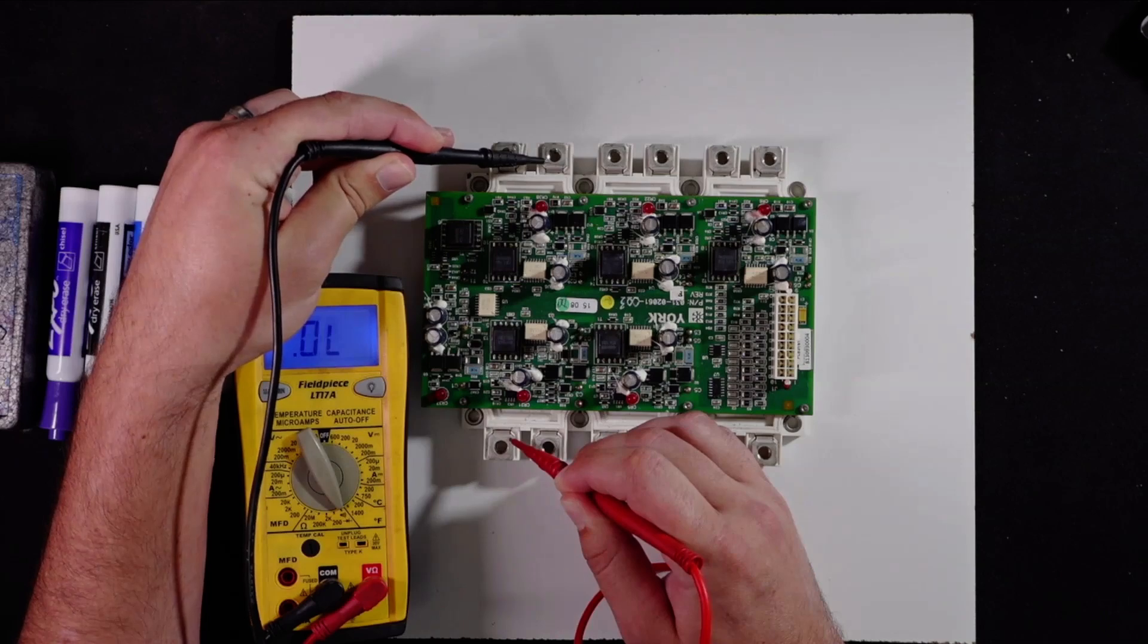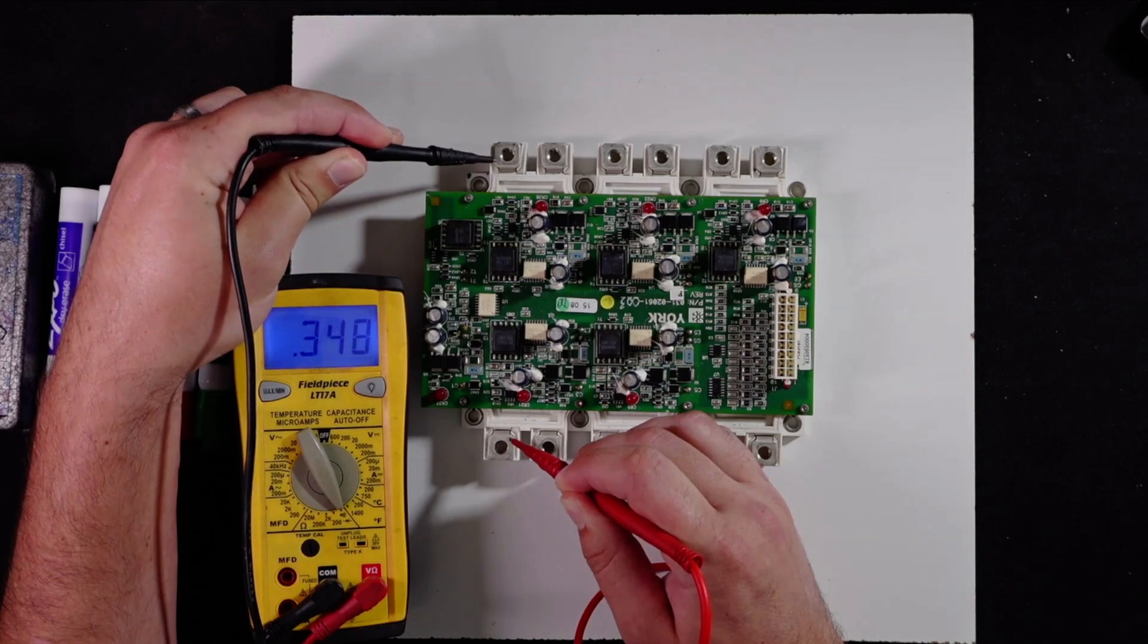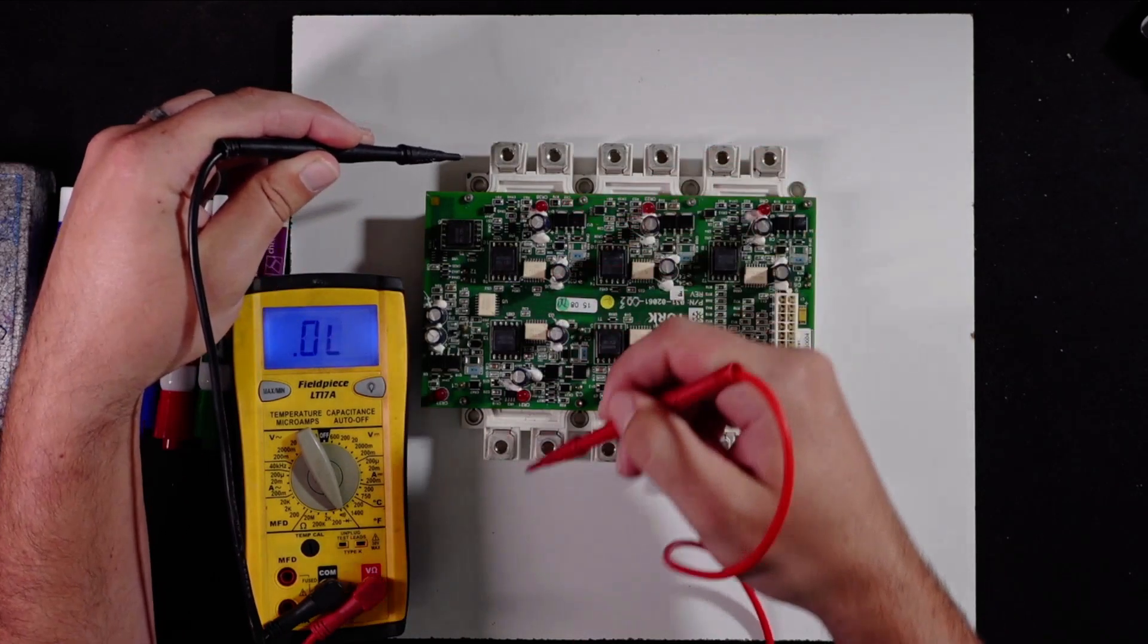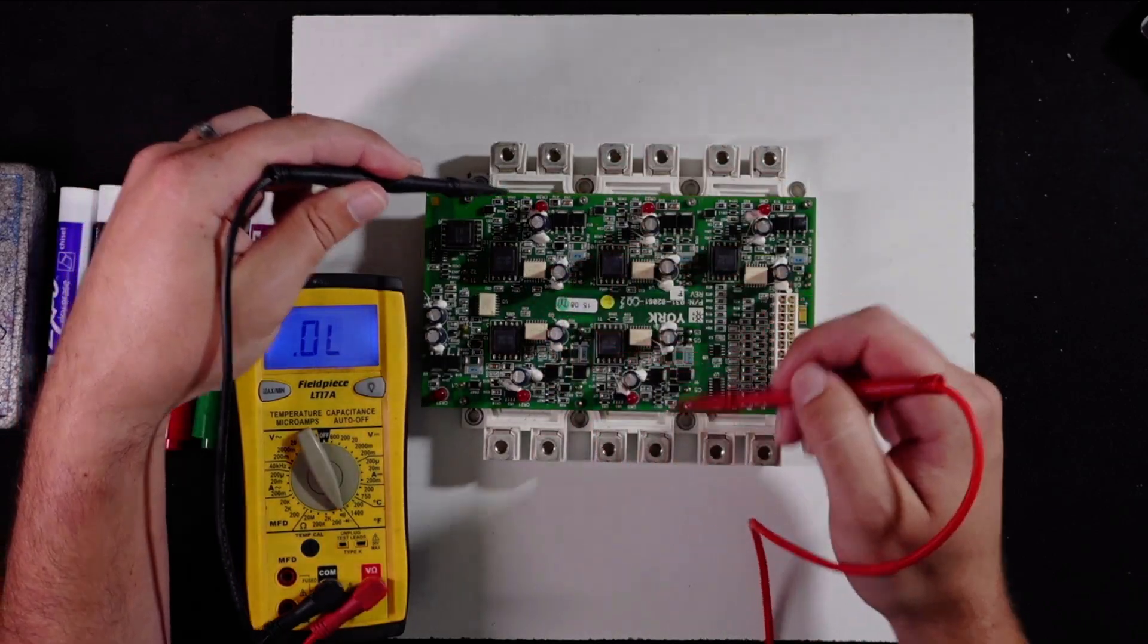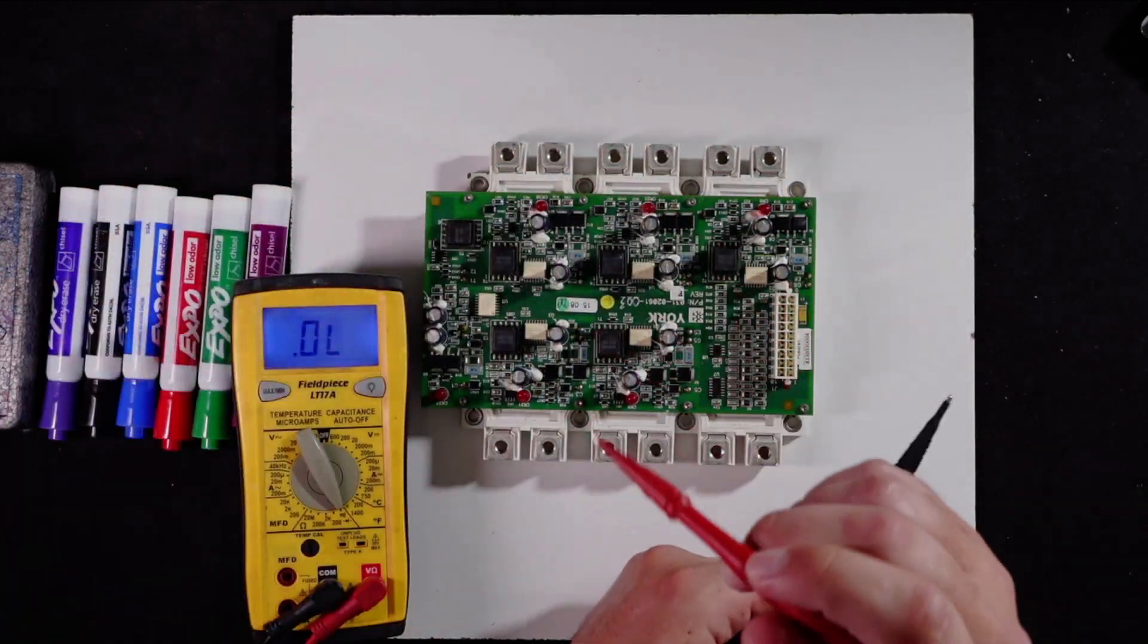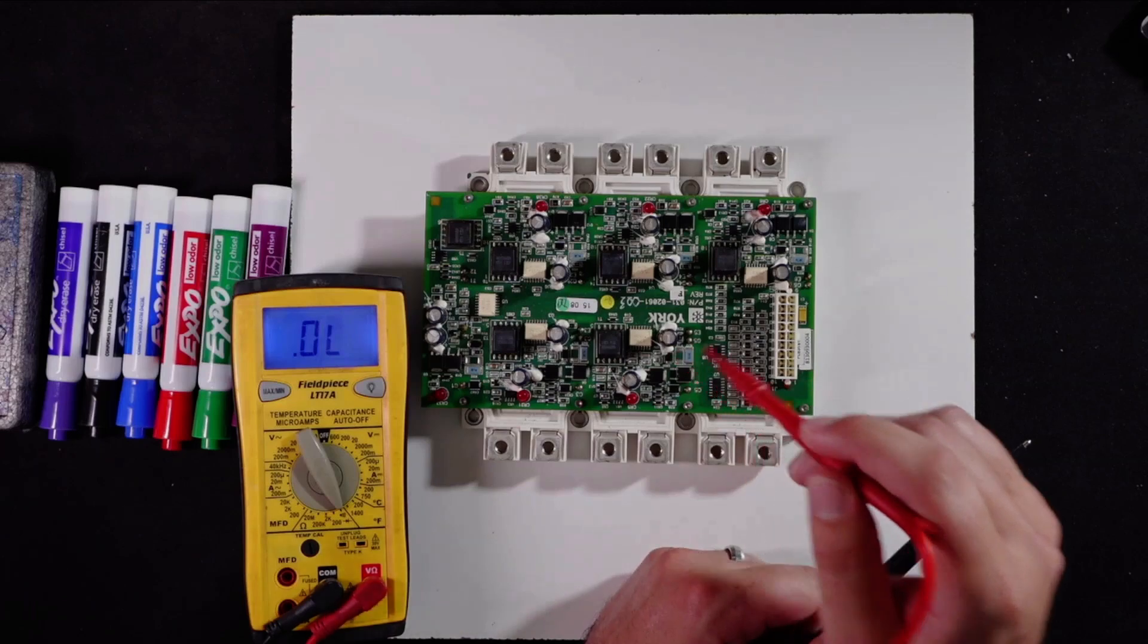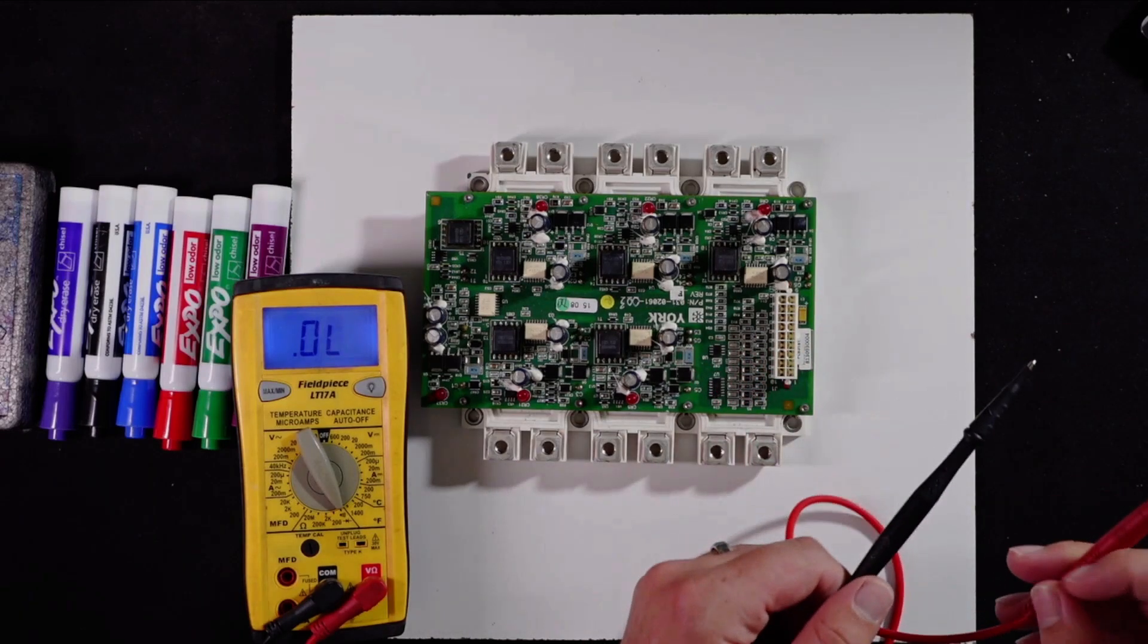So you could have a scenario where, and in the field, this test right here, this IGBT just passed. Right there, this just passed. Okay, now I could do the other three gates. But let's just say all three of these pass, but I could still be having a vibration issue from it.